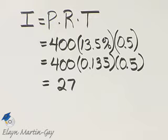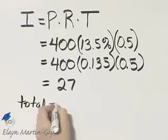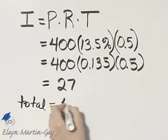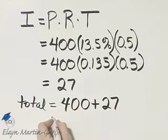So what is the total amount due the bank at the end of the six-month period? The total amount will equal the amount they borrowed. They borrowed $400, and then the interest they'll be paying is $27.